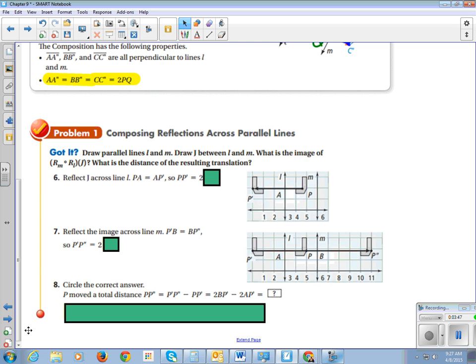So the first thing we're going to do is reflect J across line L. And when we do that, we get two times AP prime. Then we're going to reflect the image across line M. Oh, and I see the J now. It's the entire J. I was looking for point J and it was really messing me up. It's actually the actual shape J. So we reflected them across line L. So P prime, the distance from P to P prime is two times AP.